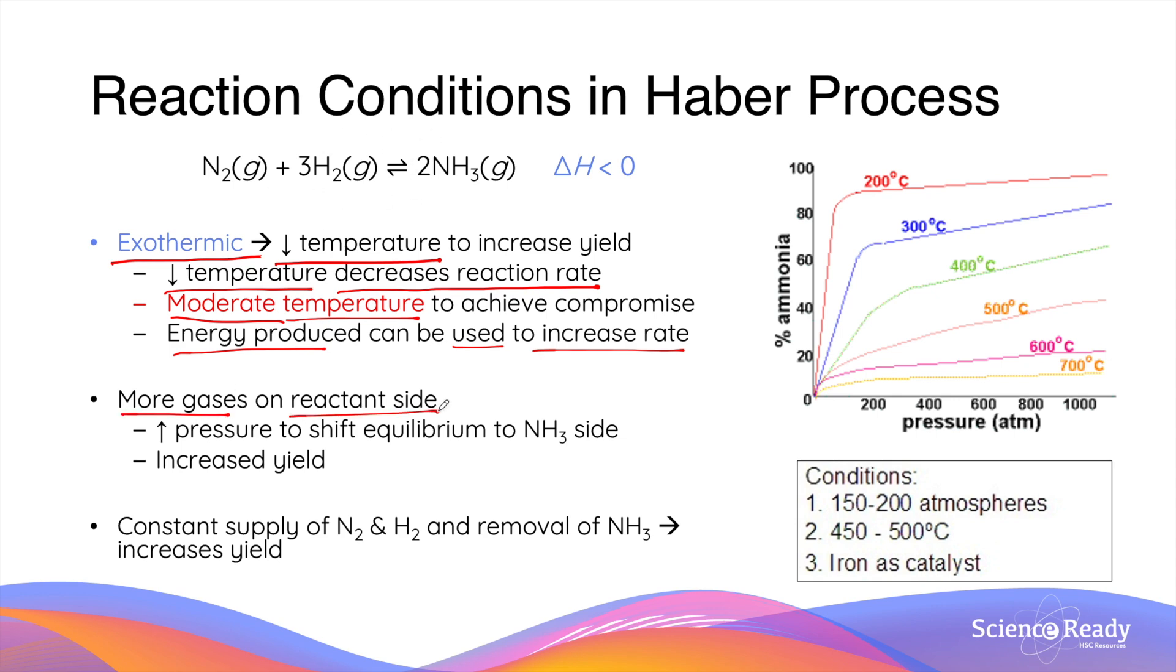In the Haber process, there are more gases on the reactant side. So there are four gases on the reactant side and two gases on the product side. Thus, if we increase the pressure of the system, this will shift the equilibrium towards the product side, which is less gases. So this is the ammonia side. And by doing so, we have increased the yield of ammonia.